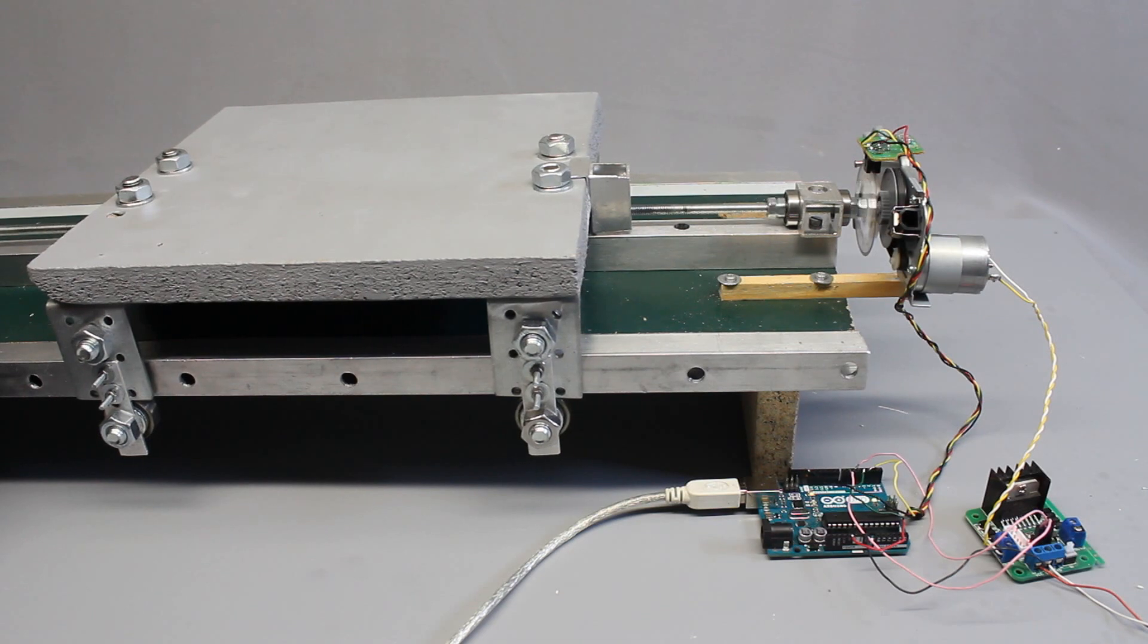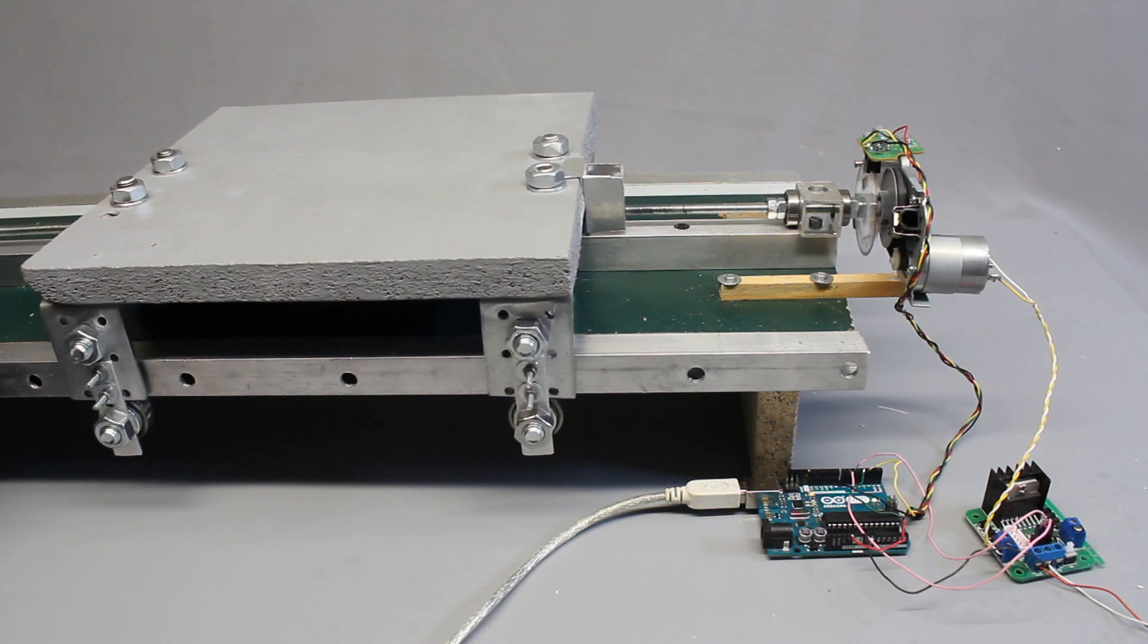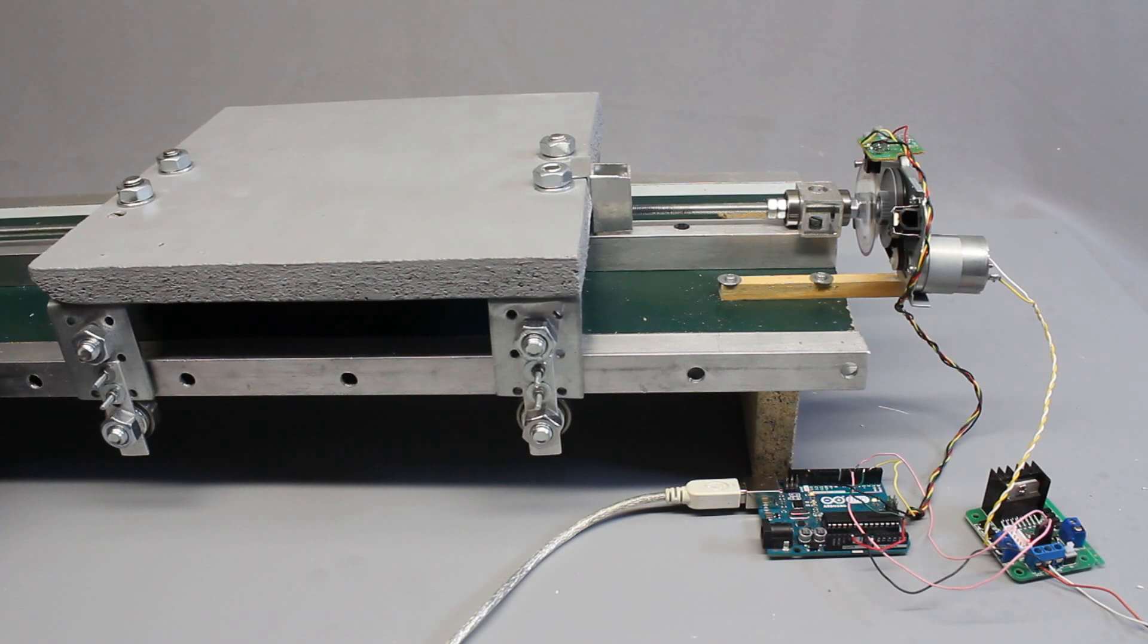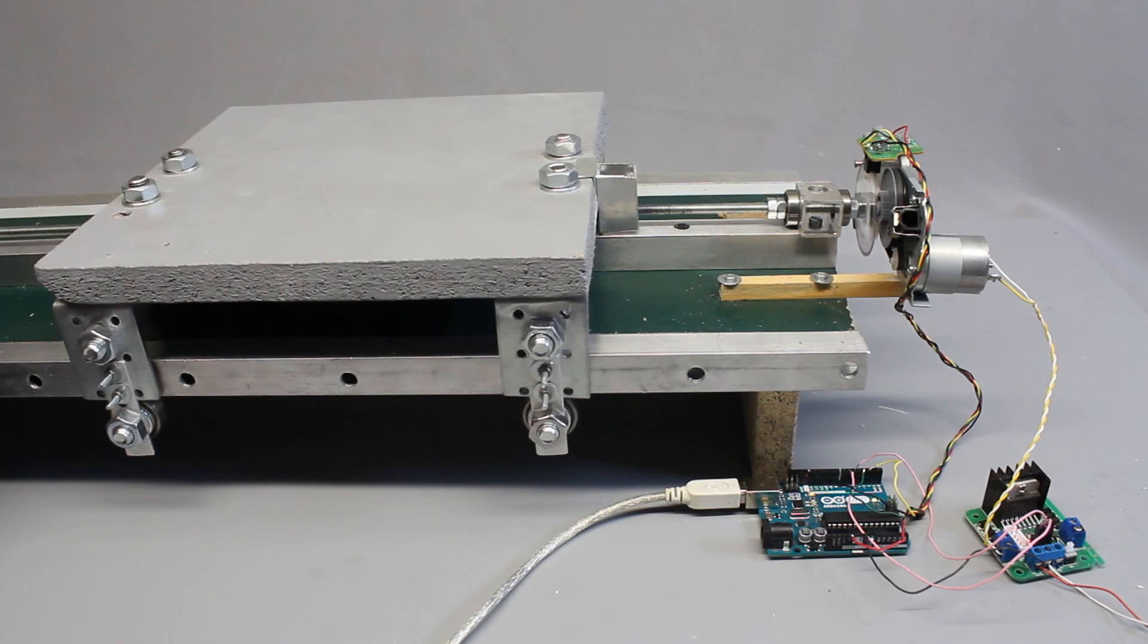Spindles are often used to transform rotational movement into linear movement. Here a 6mm threaded rod is used.